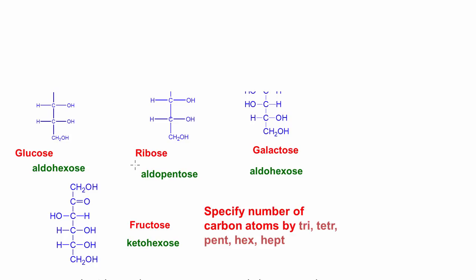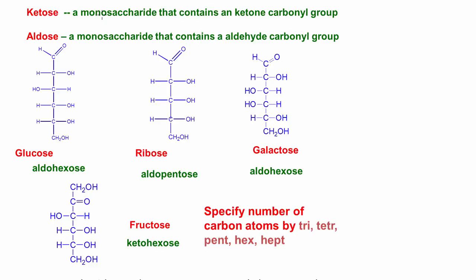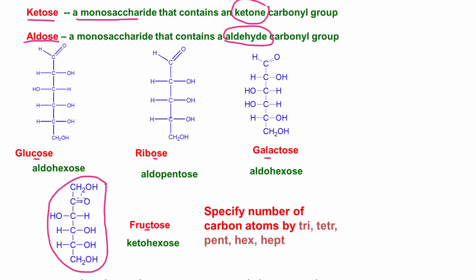Here I have some carbohydrates — these are monosaccharides. Let's define a ketose and an aldose. A ketose is a monosaccharide that contains a ketone carbonyl group. An aldose is a monosaccharide that contains an aldehyde carbonyl group. Looking at glucose, ribose, galactose, and fructose — fructose is a keto hexose because it has six carbons and a ketone carbonyl group.